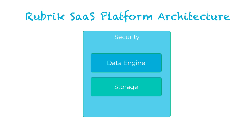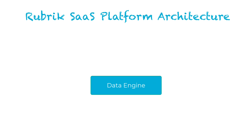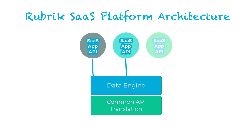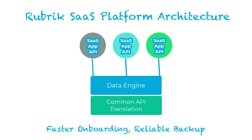At Rubrik, our platform-based architecture is immune to these traditional problems. First, we have our data engine. This abstracts away all the different SaaS APIs into a consistent, modular interface. Instead of reinventing the wheel for each application, we reuse core components. That way, when a new SaaS platform arrives, we can quickly map its API into the data engine layer without writing massive amounts of new code. The result? Faster onboarding for the apps you actually use, and more reliable, comprehensive backups today.